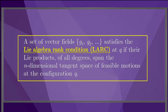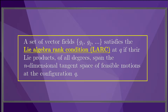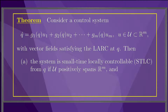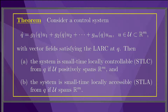With this definition, we can state the main theorem. Consider a control system Q-dot equals G1 times U1 plus G2 times U2, etc., such that the vector fields satisfy the LARC at Q. Then the system is small-time locally controllable from Q if the control set U positively spans the m-dimensional control space, and it's small-time locally accessible from Q if the control set spans but does not positively span the m-dimensional control space.